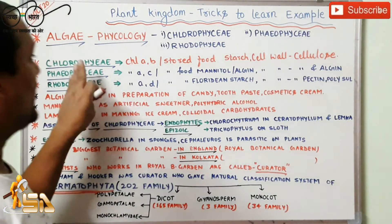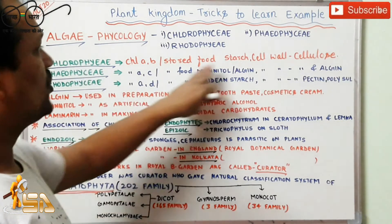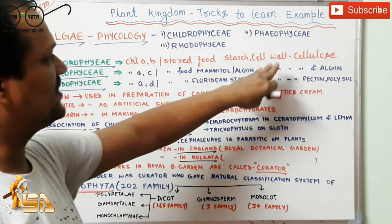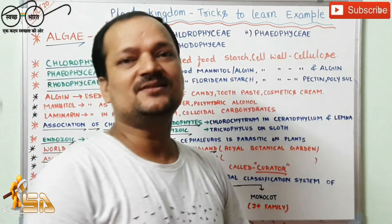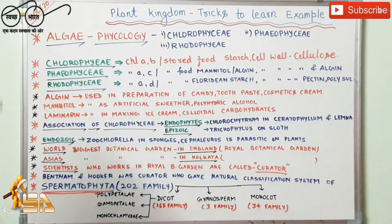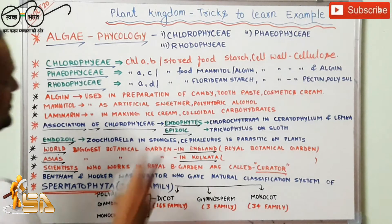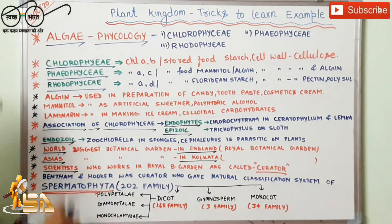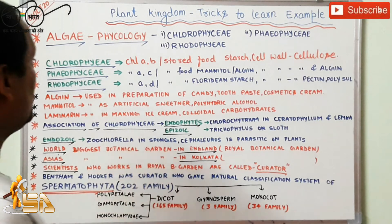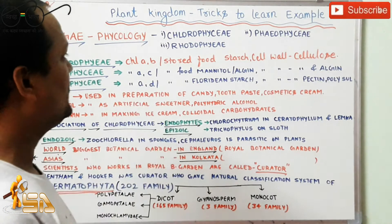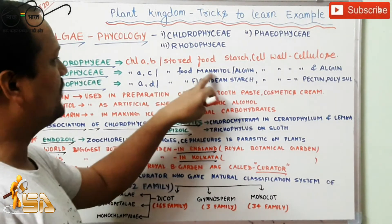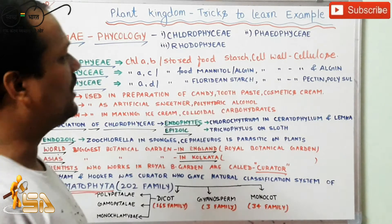The most important component of algae cell walls is cellulose, which is a polysaccharide that we have studied in the biomolecule topic. The next one is phaeophyceae, which we know as brown algae, and chlorophyceae. The stored food in phaeophyceae is called mannitol and algin.